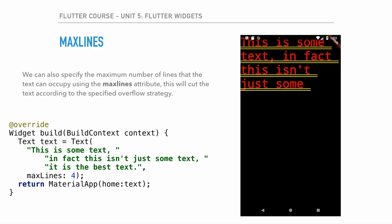Next, let's look at maxLines. We can specify the maximum number of lines the text can occupy using the maxLines attribute. This will cut the text according to the specified overflow strategy. For example, with a long string and maxLines set to 4, text that would go to a fifth line gets cut off. That's what maxLines does — let's implement it.